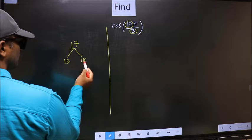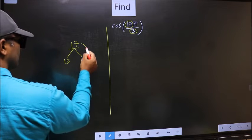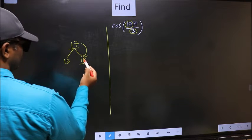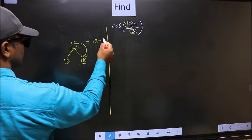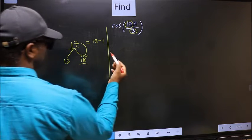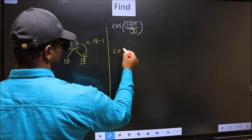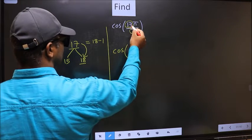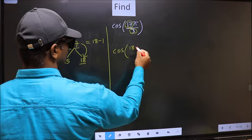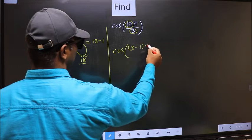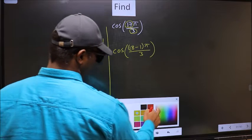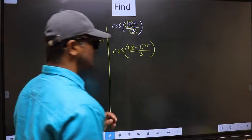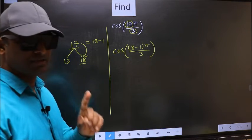Now 17 is close to which multiple? This is close to 18. So now 17 should be written as 18 minus 1. So this will become cos, in place of 17, now you should write 18 minus 1, π by 3. This is your step 1.